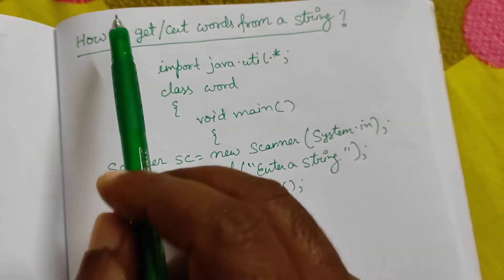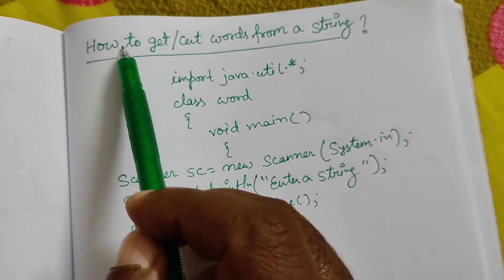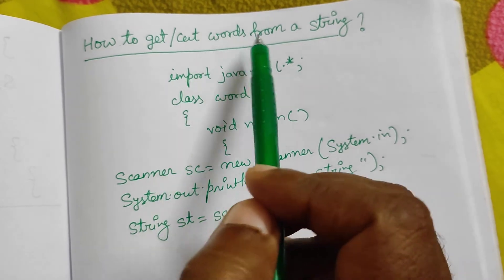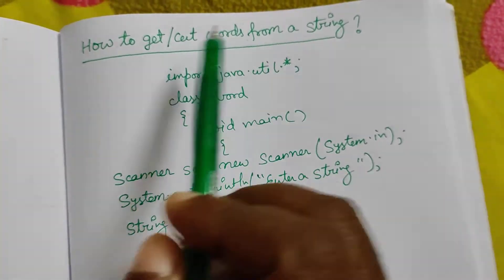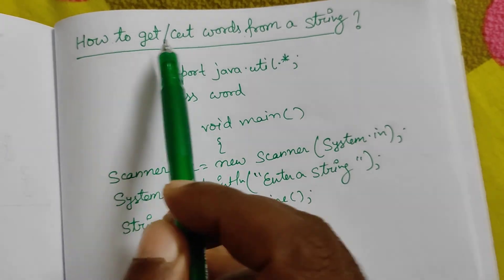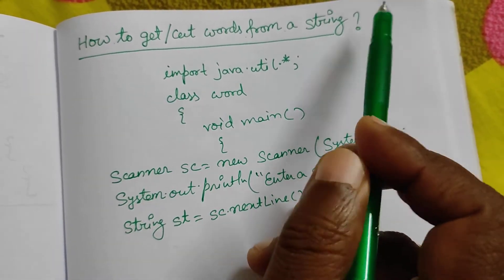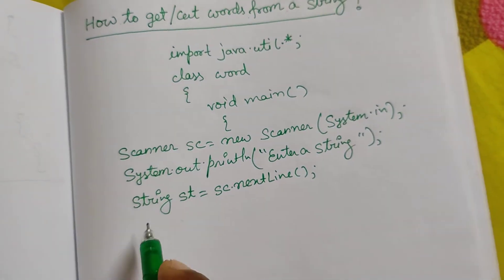Suppose you have a string. Whenever we get any space, in simple terms, we will cut the word. At the last word, we will not get any space, so we will add one extra space with that.